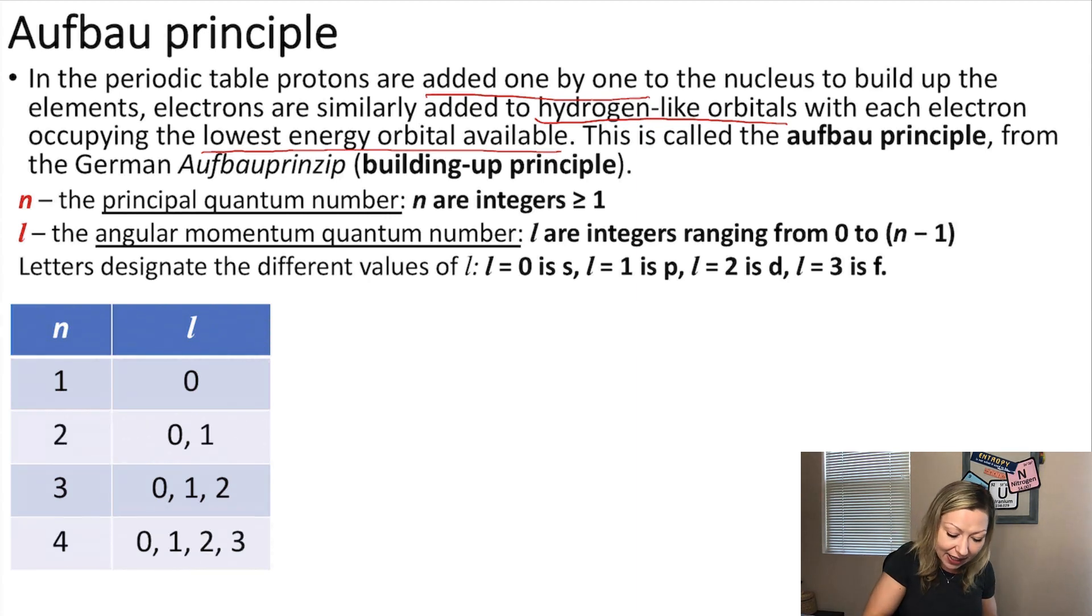Remember that n is the principal quantum number, and it tells us the energy level of the orbital. l is the angular momentum quantum number. It gives us the shape of the orbital for hydrogen, and all other elements which have more than one electron will also give us the energy of the orbital. We know that n can be an integer and should be at least one, and l is also an integer and can range from zero to n minus one. If I know n, I can figure out my numbers for l.